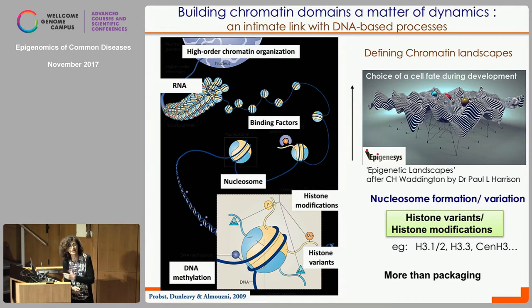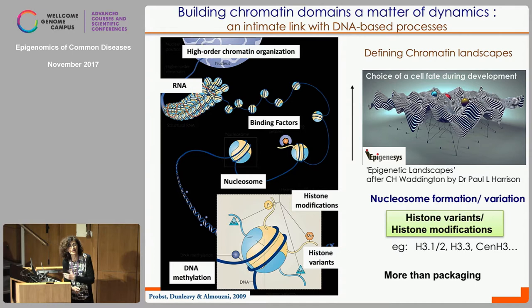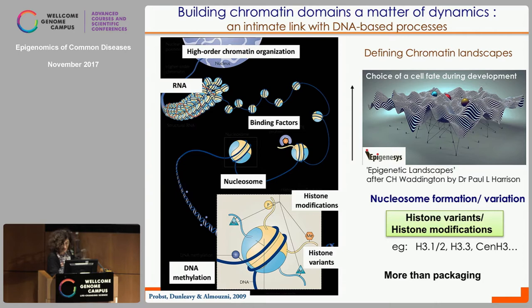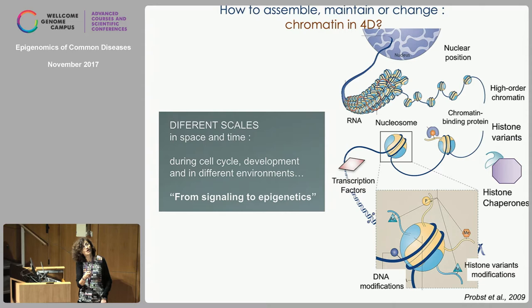This is more than packaging — there are indeed two meters of DNA that have to be packed in the nucleus, but it's not just that; it's also how that relates to function at the DNA level. There are different scales to consider for how to assemble, maintain or change this organization in 4D, because these different scales involve space and time during the cell cycle, development, and in different environments.